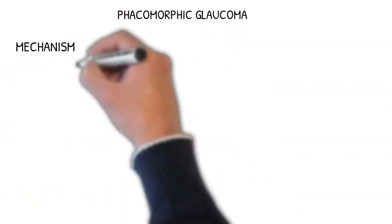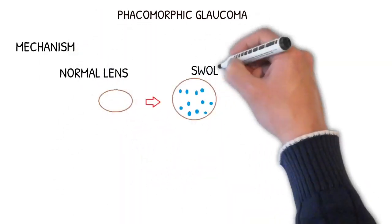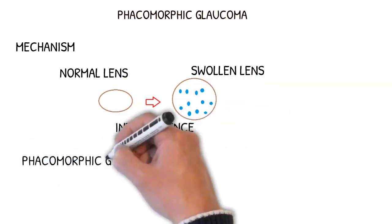Phacomorphic glaucoma: here the normal lens imbibes more and more water and becomes swollen. This is called intumescence.